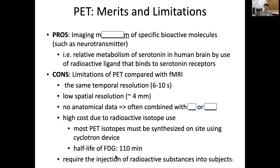A popular PET radioisotope is a glucose analog called F18-FDG — fluoride glucose — which has a half-life of about over two hours. That requires it to be injected into the subject before taking the image. For example, our institute has a micro-PET, but we don't have a cyclotron.